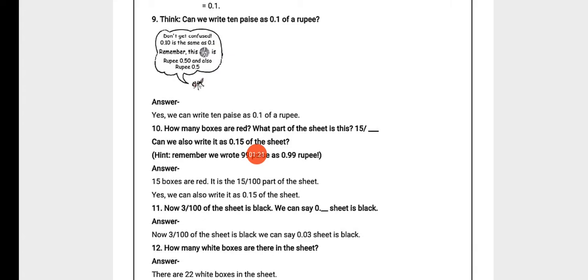Don't get confused — 0.1, 0.10, 0.1 — remember: 50 paise is Rupee 0.50 and also Rupee 0.5. We should not get confused; we can write 0.10 as 0.1 as well. Because if we take the example of 50 paise, we can call it Rupee 0.50 or Rupee 0.5.